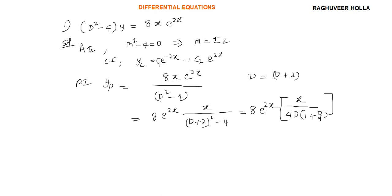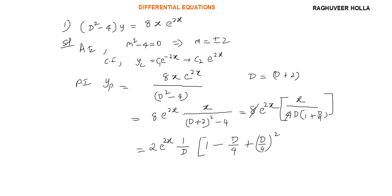Further, if I try to put it together and cancel this out, I'll have 2 in the numerator — that is 2·e to the power of 2x — and 1 by D outside. Let us try to expand this: I get 1 minus D by 4, plus (D by 4) squared, and so on.